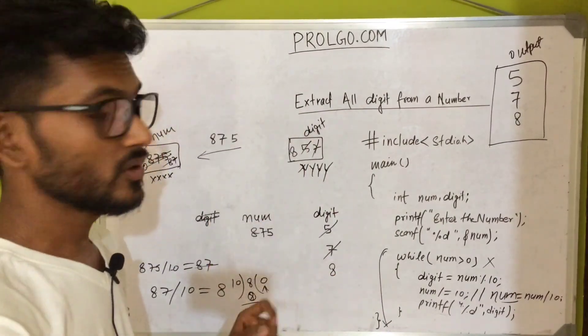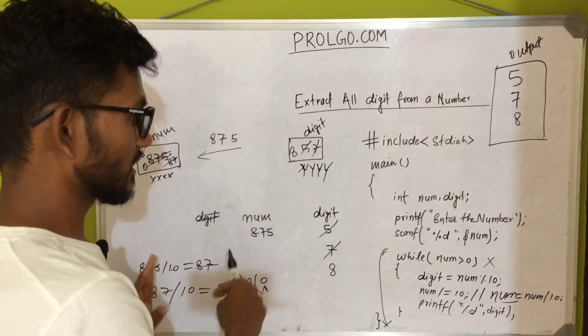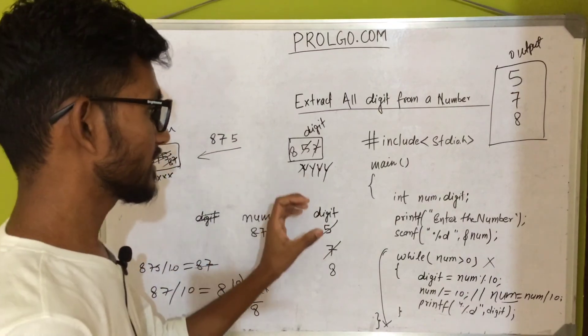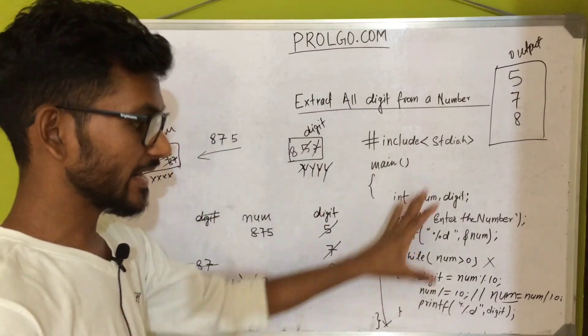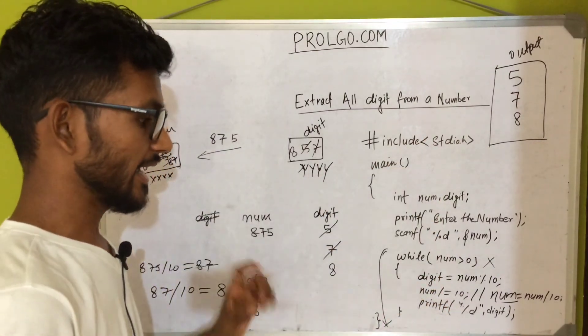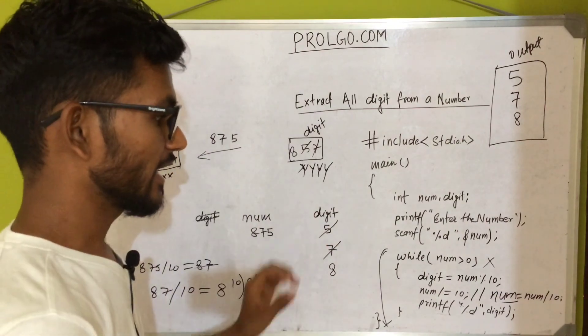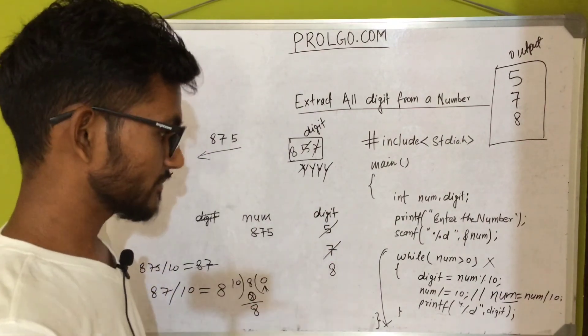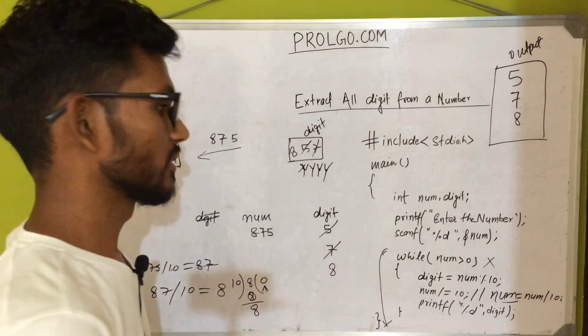That was our approach for how to extract the digits from a number. I will now write the same program on the computer and show you the output, and after that I will show you some more examples.